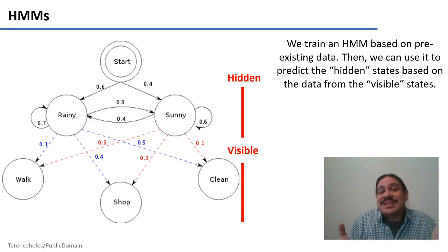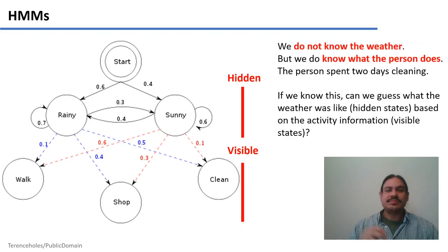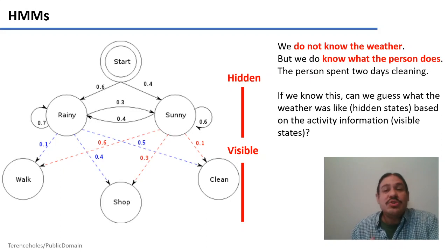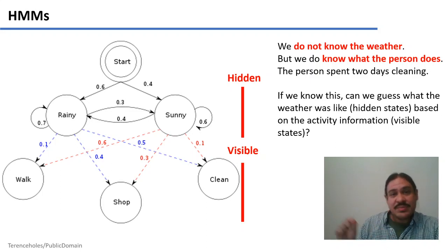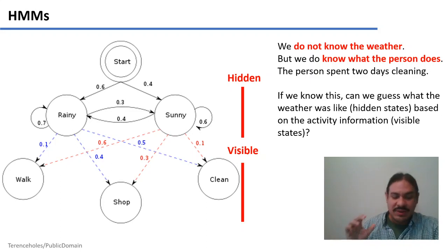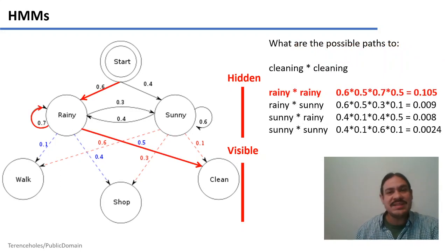Spoiler alert — this is going to be signal processing. What we can see is the raw signal, and we want to guess some hidden pattern behind it. Let's say we don't know what the weather is — the hidden information — but we do know what people do. We have information that people were maybe cleaning for two days in a row, or walking for two days in a row. Given the information on what people are doing (the visible states), can we guess the probability of what happened in the hidden states? So if we know that people were cleaning two days in a row, can we figure out what the weather was? It takes time, but yes, we can.